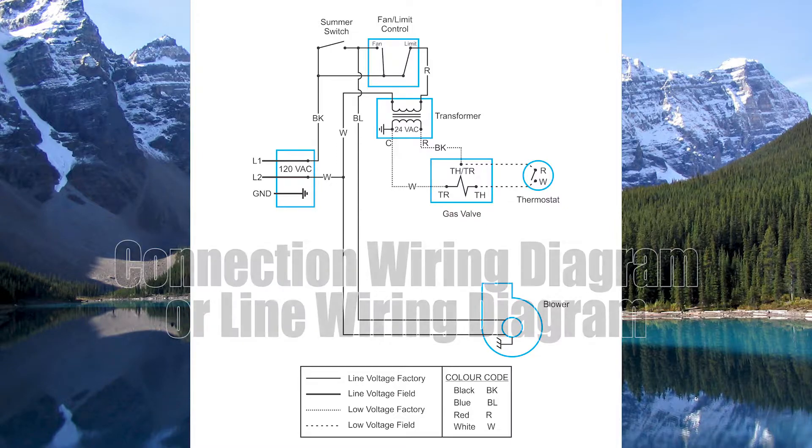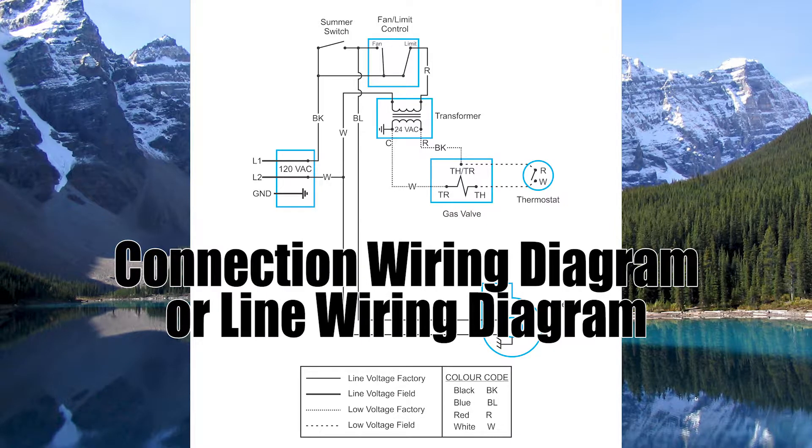The next type of diagram is the connection diagram or the line diagram. Now the key features here: they're going to show you the wires, where they are in relationship to the equipment, the colors of the wires, and graphical representations of the components.